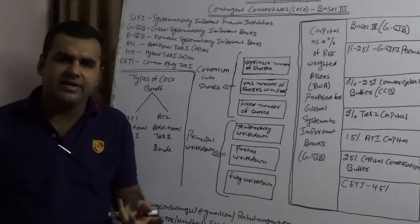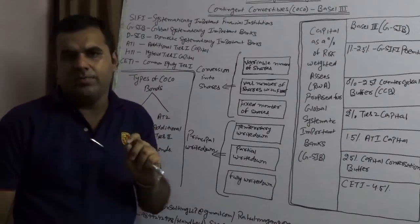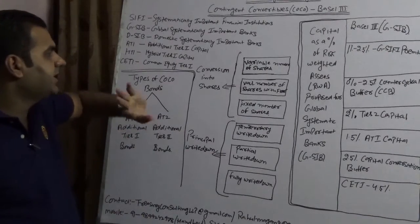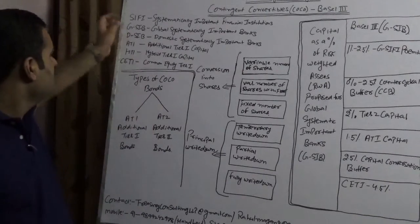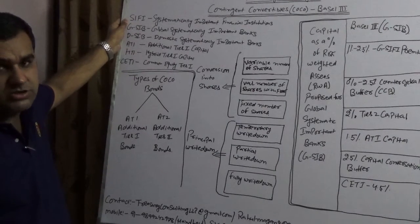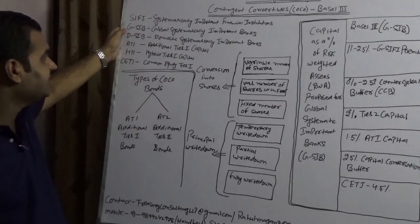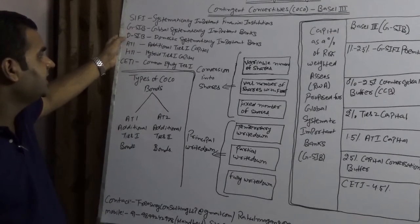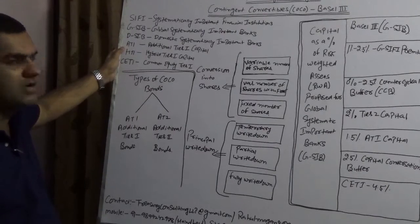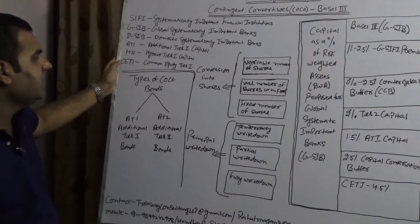Before moving ahead, let me summarize a few terms which are as per Basel 3. One is SIFI, systematically important financial institutions. SIFI, and Deutsche is one of the SIFIs. If they fail, you will understand what I mean to say. GSIBs, globally systematic important banks. DSIBs, domestic systematically important banks. AT1, additional tier 1 capital. ST1, hybrid tier 1 capital. And CET1, common equity tier 1 capital.